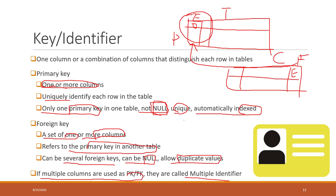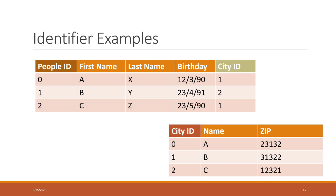Let's look at an example. We have two tables. The first table is about people, and it has first name, last name, birthday, and the city where the person is currently living. Can we use first name as a primary key? The answer is no, because some people may have the same first name. For the same reason, we cannot use last name or birthday as a primary key, because people may have duplicated last names or birthdays.